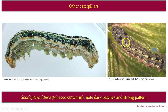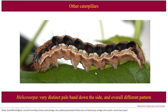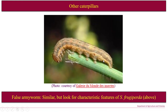Looking at other caterpillars, here is an example of close relative Spodoptera litura — these are the black marks which are absent in the fall armyworm. We're getting a lot of these submitted. Helicoverpa is also being submitted as suspect fall armyworm; these are different based on overall pattern, coloration, and seta arrangement. And the false armyworm, while similar, lacks the diagnostic characters which are present as a group in frugiperda, as described previously.